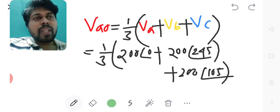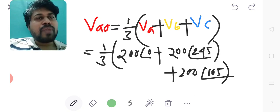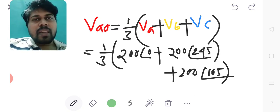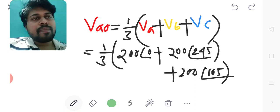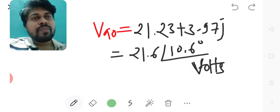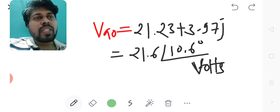VA0 equals 1/3 times (VA + VB + VC). Substituting the values of VA, VB, VC in the expression for VA0, we get the answer as VA0 equals 21.23 plus 3.97j, which is